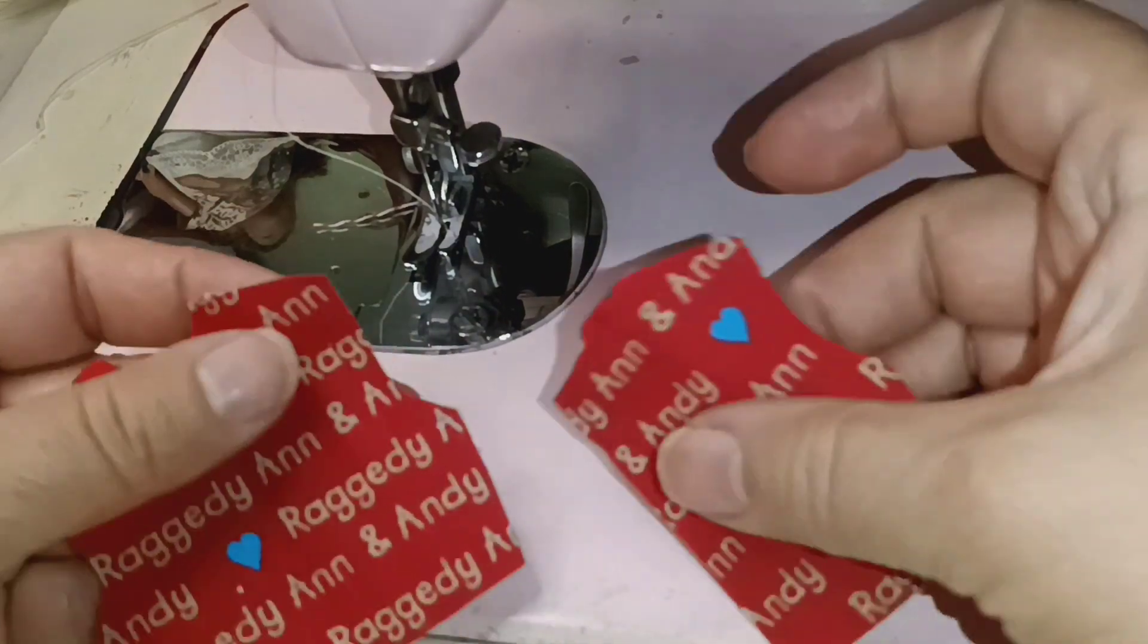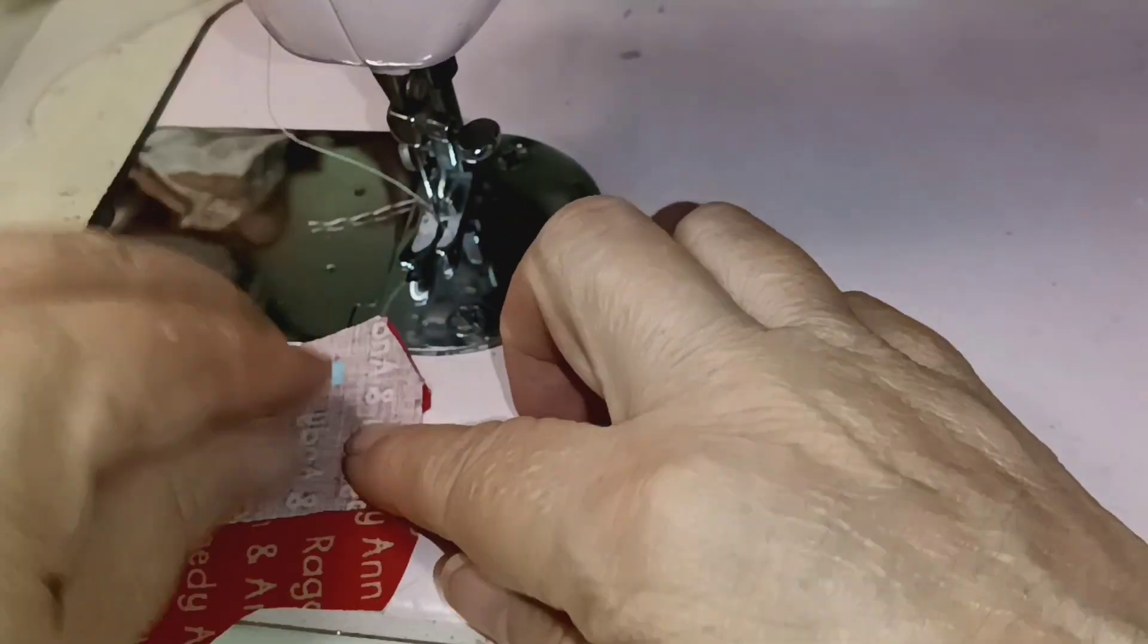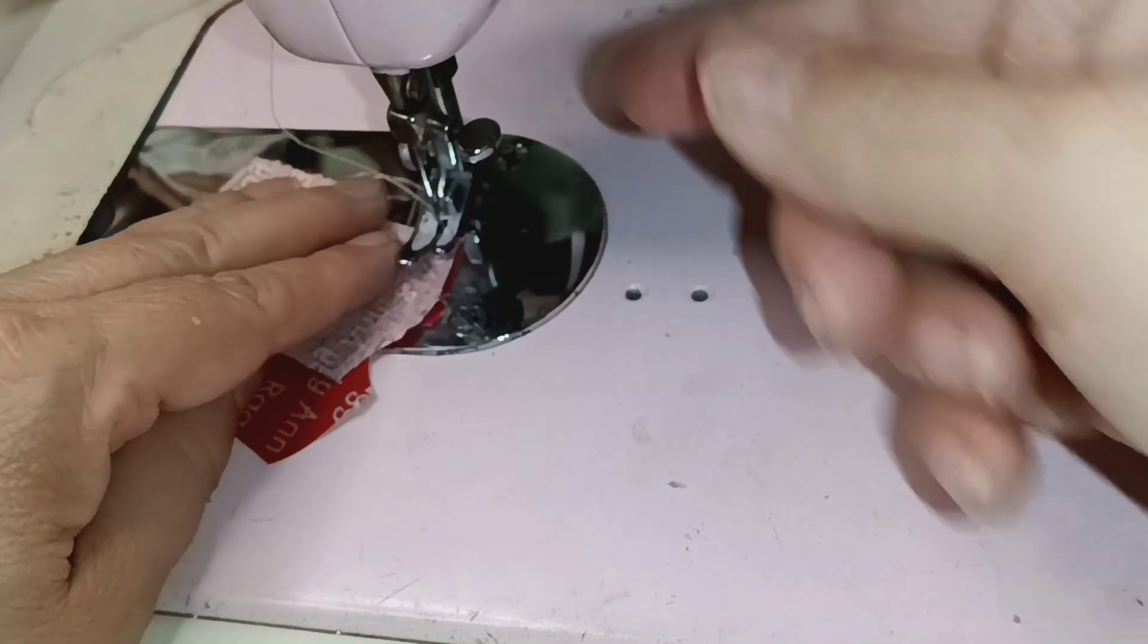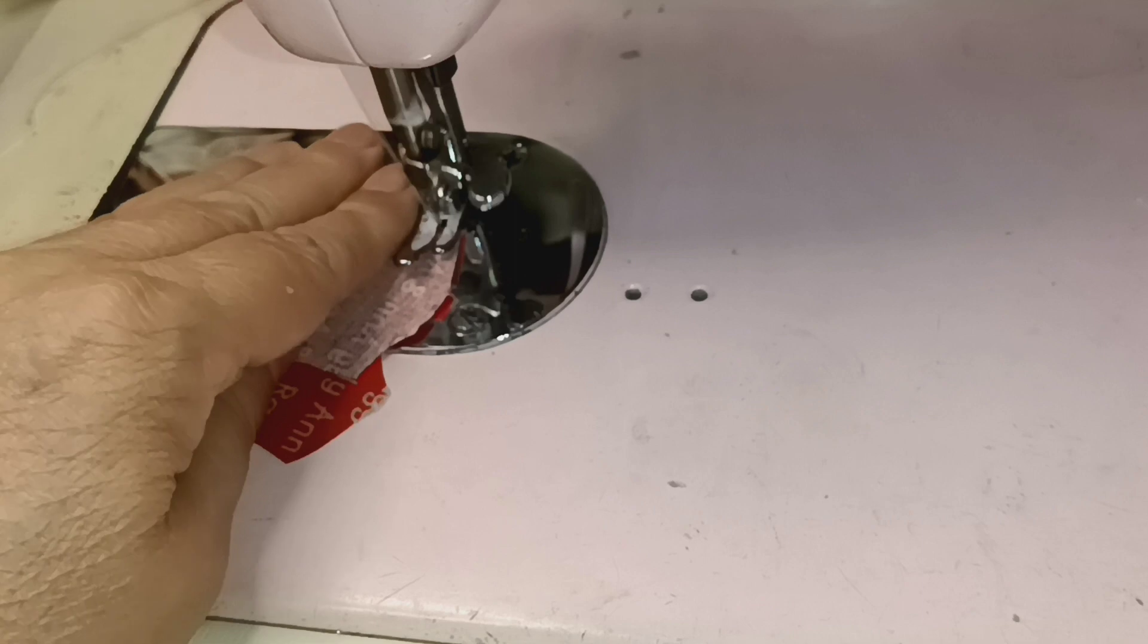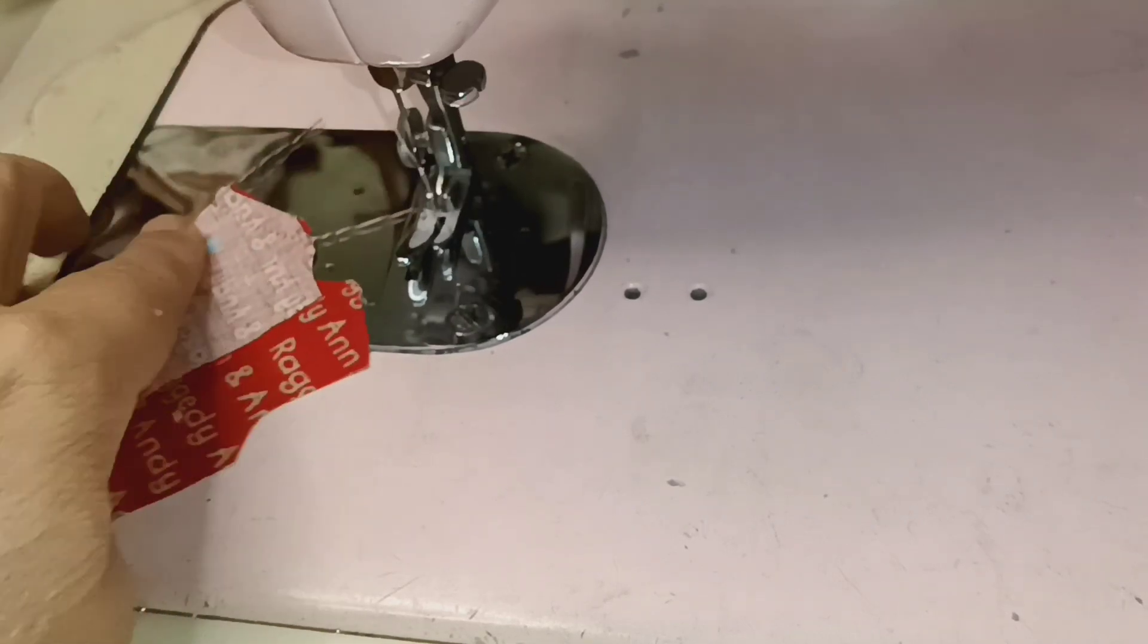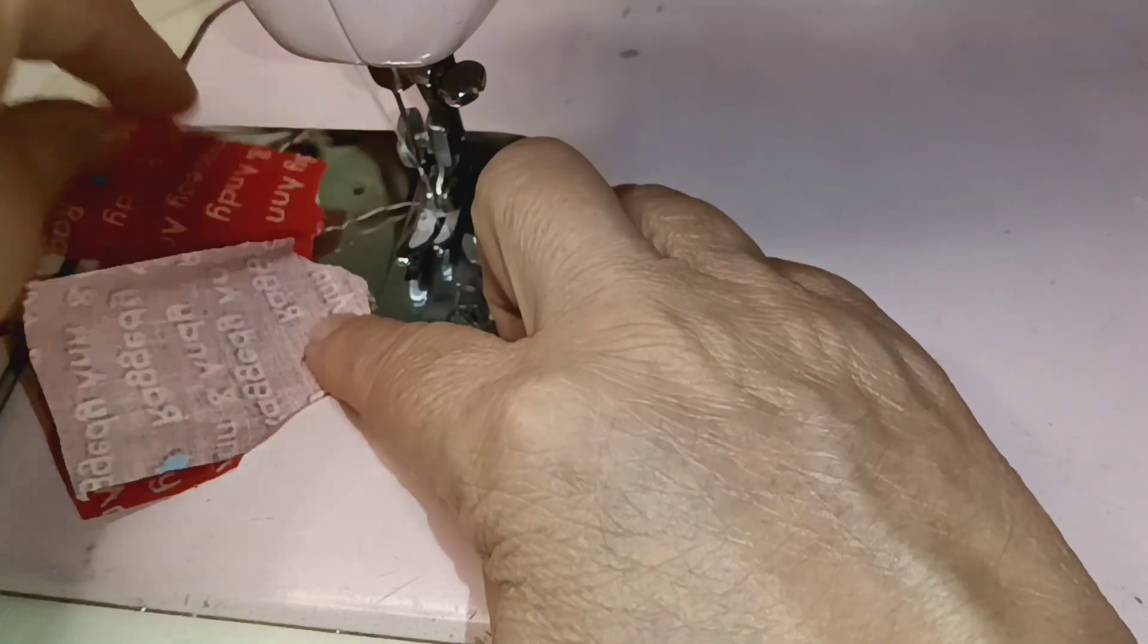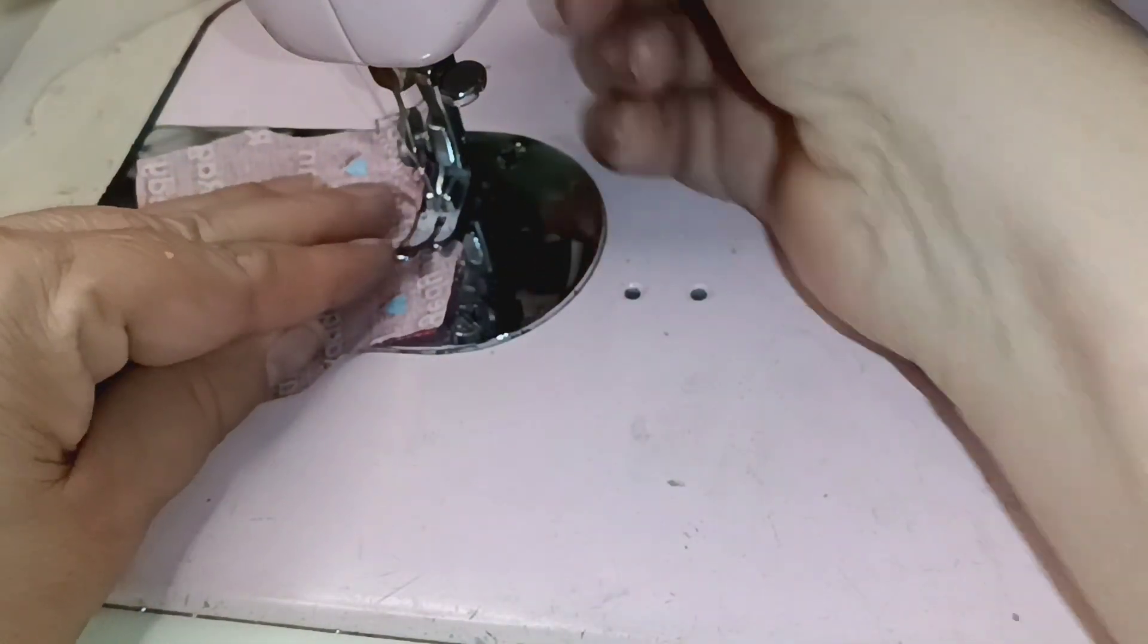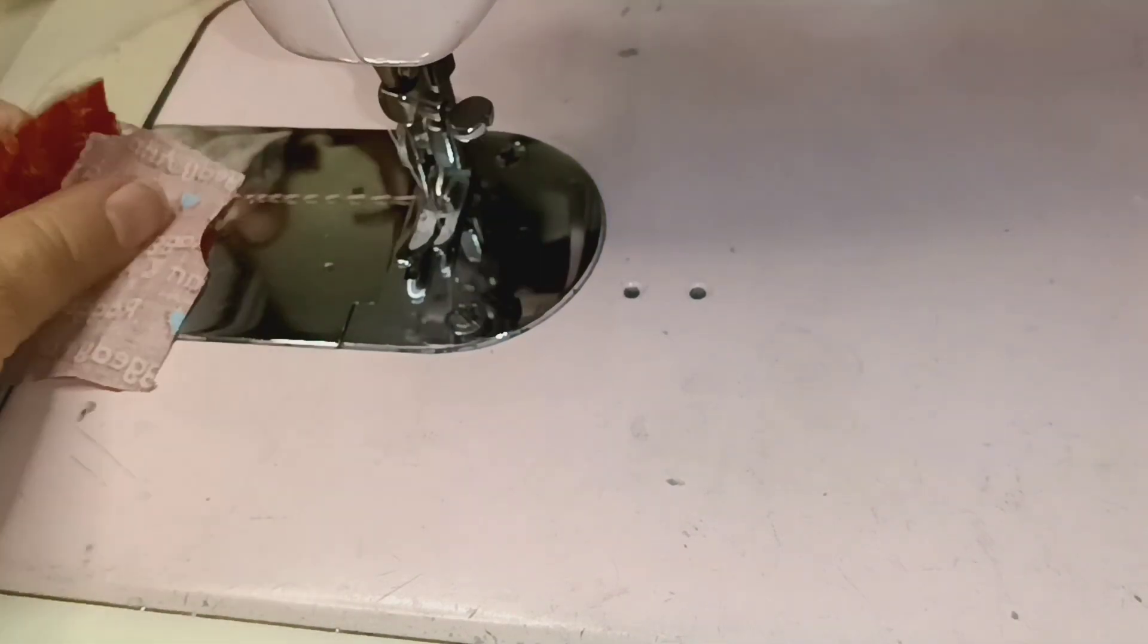Here are the pieces and we're going to do the blouse first because it has more detail. Right now I am going to adjust the tension so that we have a nice tight stitch.